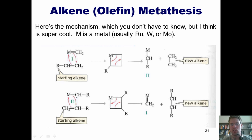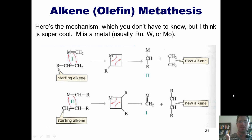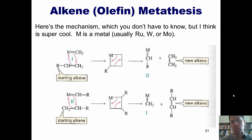This molecule now undergoes an analogous transformation with a second molecule of this original alkene to form this four-membered ring. A subsequent electron rearrangement then releases the alkene product in which the internal carbon from one alkene has formed a double bond with the internal carbon from the second alkene, and then releases this metal double bonded to a CH2, which then goes back and repeats the cycle. Once again, you don't have to know this mechanism, but I think it's supremely cool. The work of Grubbs, Schrock, and Chauvin, not only in terms of developing the chemistry but also in terms of discovering this mechanism, is why they shared the Nobel Prize for it.